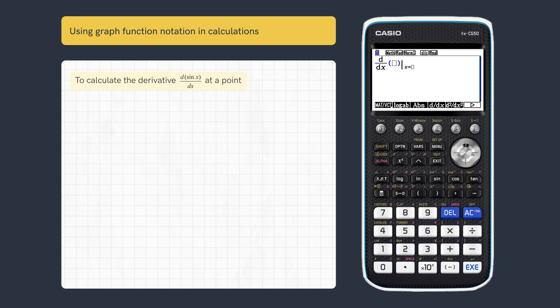we can navigate to the derivative and use function notation instead of the actual function. Start by pressing vars, then graph, y and the function saved position 1.